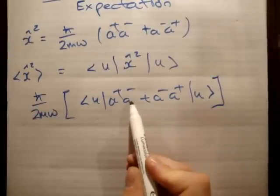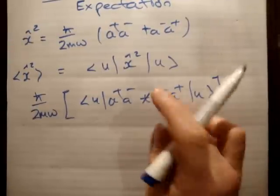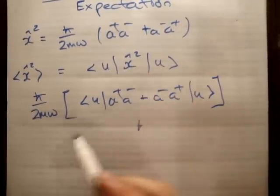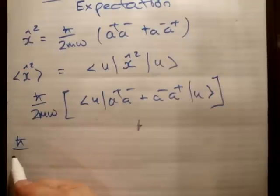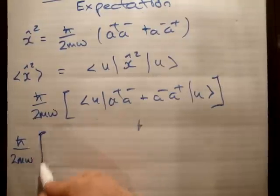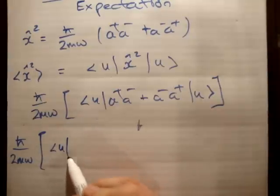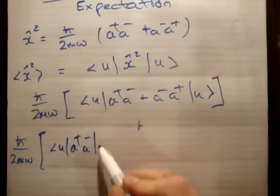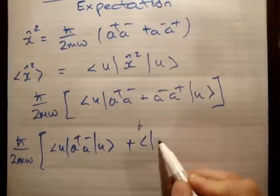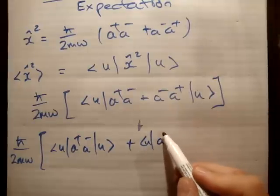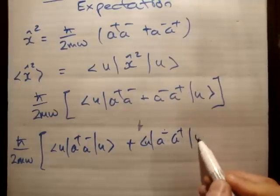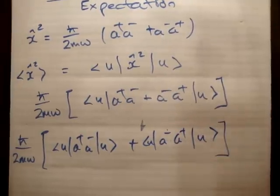I've told you plenty times at this stage that because of the addition here we're able to split this integral into two integrals. So we have the constant on the outside again and we're going to have u, a plus, a minus, plus u times a minus, a plus like that. Okay, that's our integral.